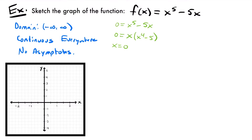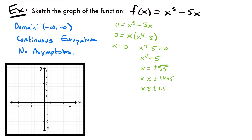We set each factor equal to zero: x equals zero, and x to the fourth power minus five equals zero. The first one is already solved. For the second, adding five to both sides gives x to the fourth power equals five, and taking the fourth root of both sides gives x equals plus or minus the fourth root of five. Plugging that into a calculator, x is approximately plus or minus 1.495, which I'll round to plus or minus 1.5. So we have three x-intercepts: (0, 0), (1.5, 0), and (−1.5, 0) approximately.